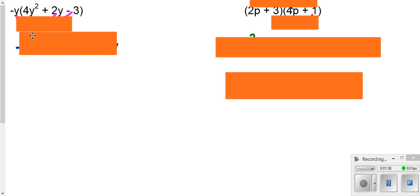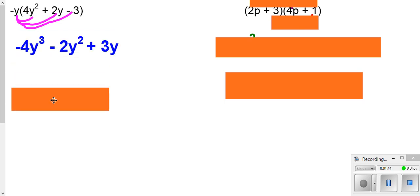This one here, we just have to distribute through because it's a negative y times everything in the parentheses. So if we do that, we end up getting this here. We have no like terms because like terms have the same variables with the same exponents. We do have three terms with all the same variables, but the exponents are all different. So we do not have like terms.